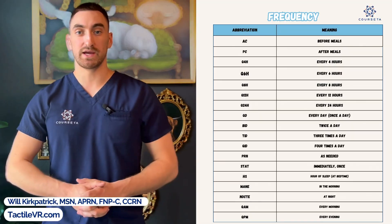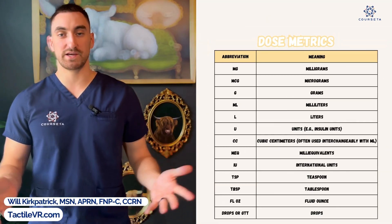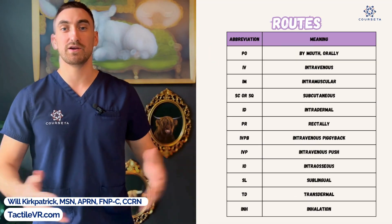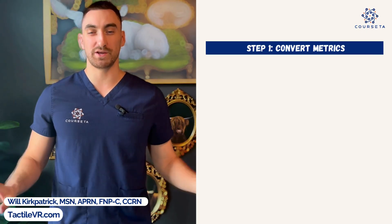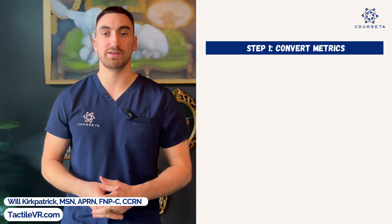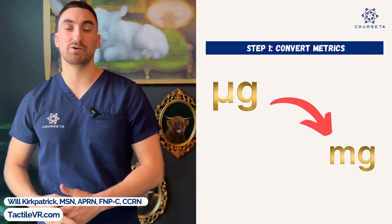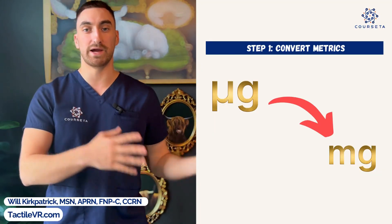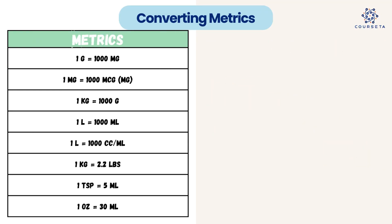The next thing you need to know before we get into the formulas is abbreviations. There are lots of different abbreviations that they may use, so make sure you write all of these down. Now, with every dosage calculation problem, you're going to have two simple steps. Step number one is always converting your metrics. So if a problem asks you to convert to milligrams and your dosage is in micrograms, you need to know how to convert. Make sure you write all of these metrics down — conversion is the first step to every dosage calculation problem.